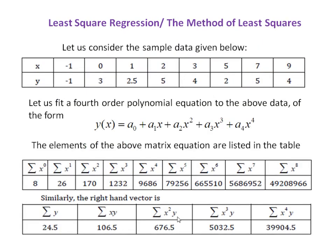Let us now consider an example with sample data for variables x and y. The values of x are: -1, 0, 1, 2, 3, 5, 7, and 9. The values of y are: -1.3, 2.55, 5, 4, 4, 2, 5, and 4. We want to fit a fourth order polynomial of the form y(x) = a0 + a1*x + a2*x² + a3*x³ + a4*x⁴. The elements of the matrix are given in the following tables.